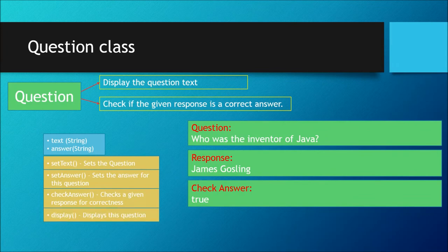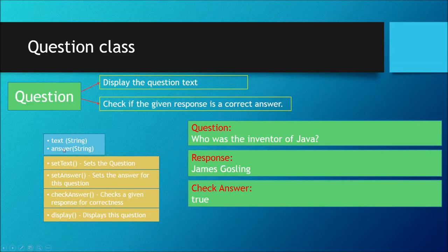The fourth method is display. The display method will print or display the question. So your Question class will have two private instance fields — text and answer — and then the methods: setText, setAnswer, checkAnswer (which returns a boolean), and display.